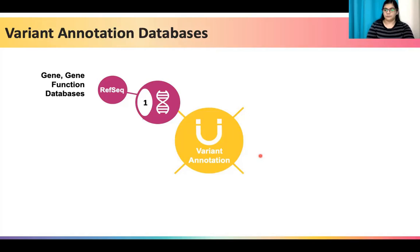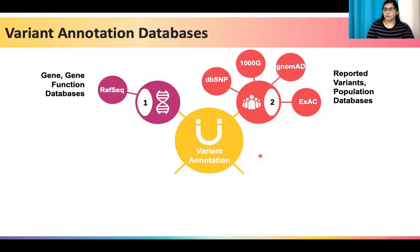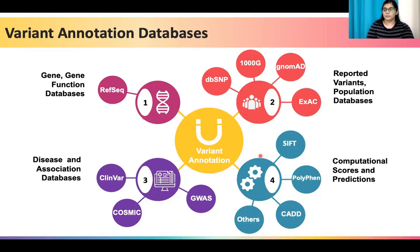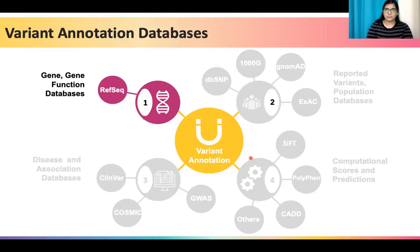So let us look at what information can be annotated against our variants and the databases that can help us do this. Firstly, we need to annotate the gene name or the transcript name in which the variant is found, the type of variant, and the functional or molecular consequence. Next, we need to know if the variant is already known and recorded in databases like dbSNP and if its frequency of occurrence is known in different populations. It will also be great to know if the variant has been reported in context of a disease in databases such as ClinVar. And finally, we may need to know what computational prediction tools predict for the variant.